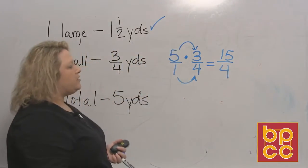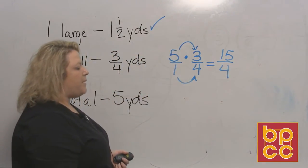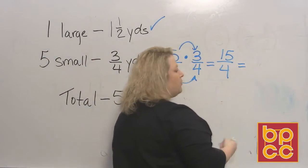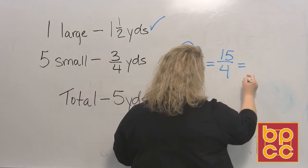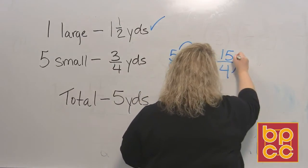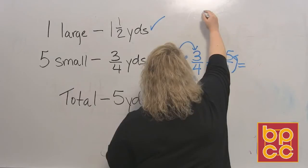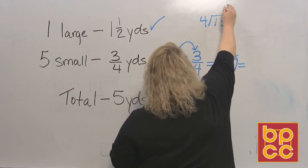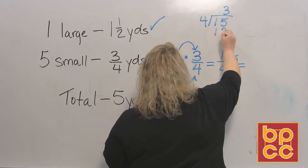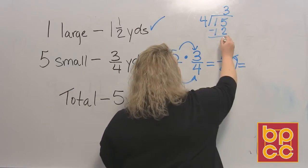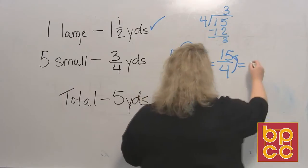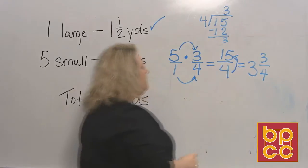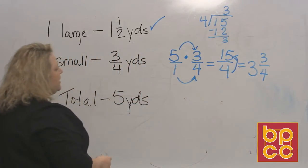That gives us fifteen over four. Because we're dealing with measurement, we want to turn that back into a mixed number. To do that, divide four into fifteen: four goes into fifteen three times, which makes twelve, leaving three. So that would be three and three-fourths yards — that's how much he needs for the five small shirts.